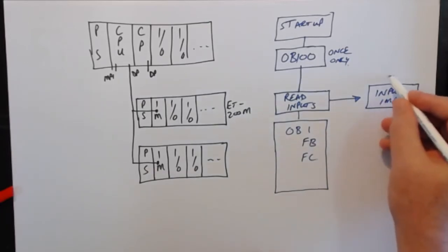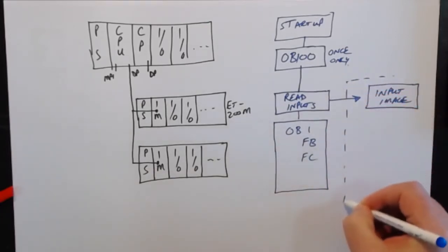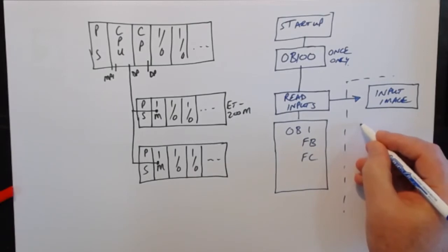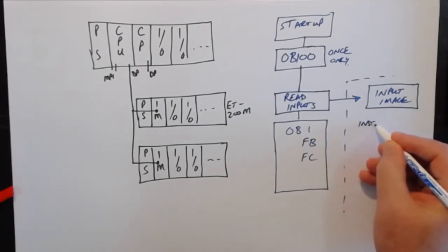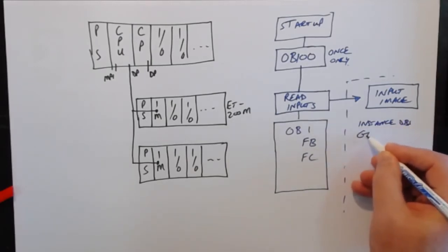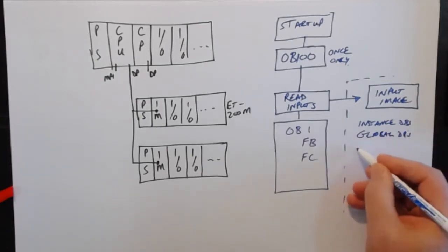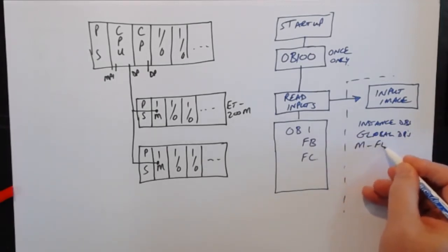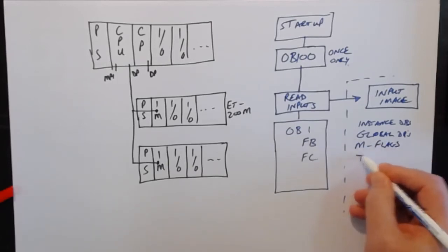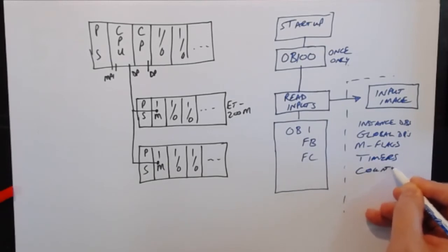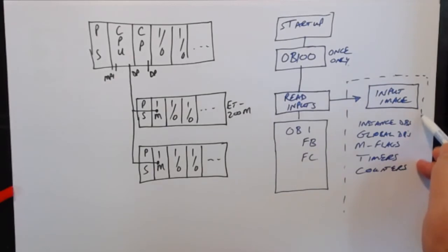So in your memory, you've got instance DBs, you've got global DBs, you've got all your M flags, you've got timers, counters, etc. All that makes up your program state.